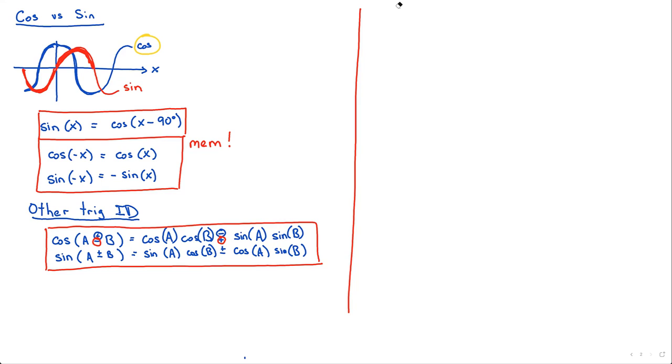This next identity is very important. It's how to go back and forth between a polar and rectangular formulation of a sinusoidal steady-state waveform. Let me first share with you what I mean by polar versus rectangular.